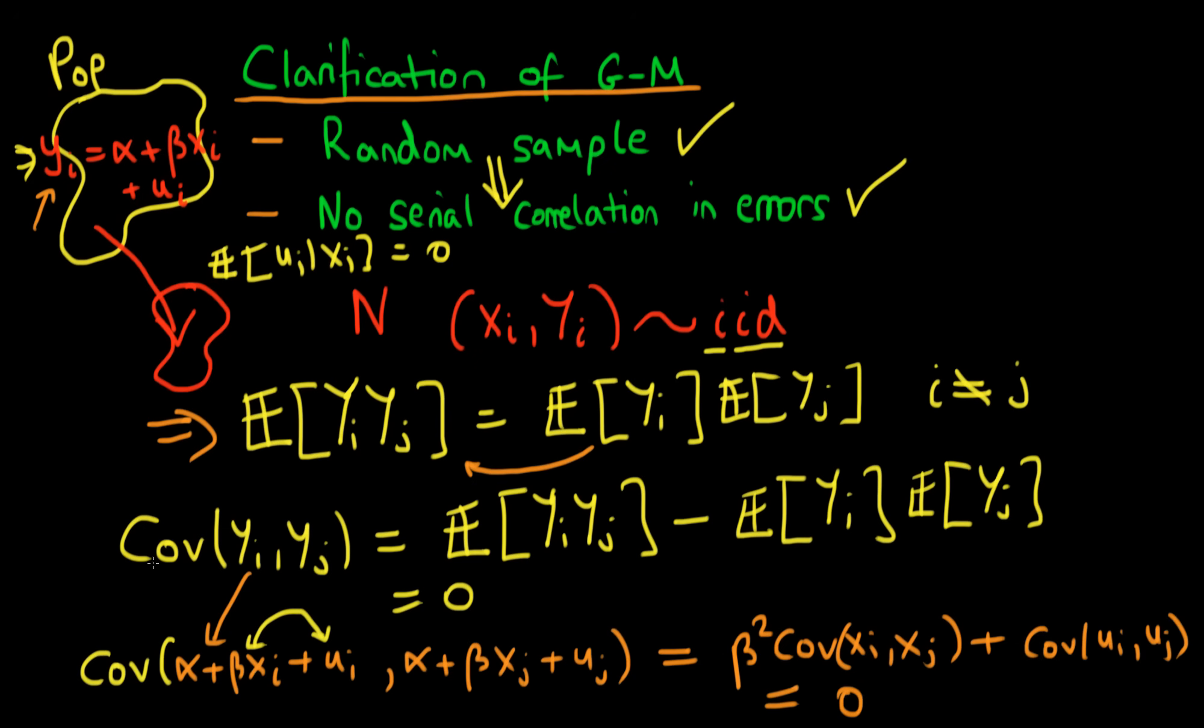Because of the fact that we know that the covariance of yi with yj is zero, and further because we know that the x's are independent, we know that we can get rid of this first term here. Finally we can see here that we're left with the fact that the covariance of ui with uj must be equal to zero. In other words, we've got to have no serial correlation in errors, and we've got that just by assuming the fact that we had a random sample.